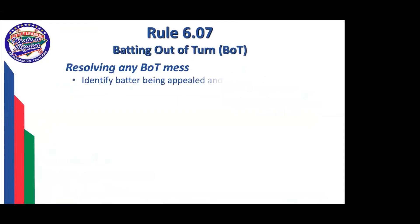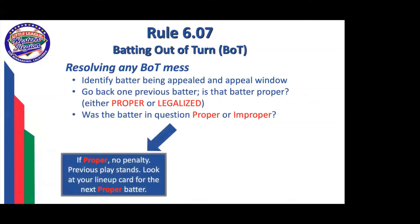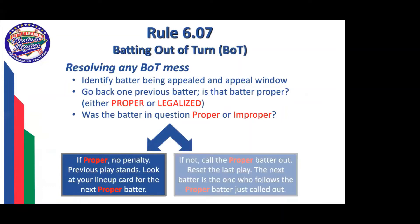Some people will overly complicate fixing a batting out of turn — it's very straightforward. You look at the batter being appealed: is that batter being properly appealed within the window allowed before the next pitcher play? You then go back one batter — is that batter proper? Either proper or legalized. Then you ask: was the batter in question proper or improper? If proper, there's no penalty, the previous play stands, and you look at the lineup card for the next proper batter. If not, call the proper batter out, reset the last play, and the next batter is the one who follows the proper batter just called out. Take a deep breath before you attack any of these — sometimes you can end up with 27 different permutations and combinations. But look at the batter being appealed, back up one, figure out what that is, and you'll be fine.